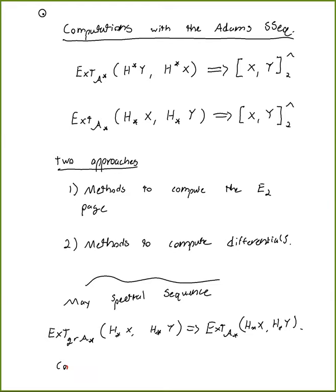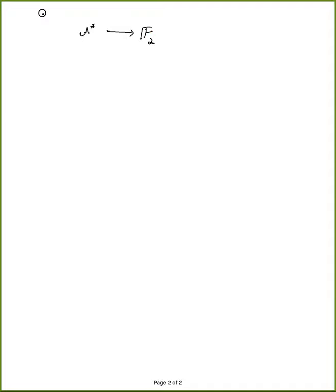The May spectral sequence arises from a filtration of the dual Steenrod algebra. The filtration is a bit annoying because normally when you think about filtrations of commutative algebras you'd filter by modules, but here it's a filtration by comodules. It arises from a filtration on the Steenrod algebra given by powers of the unit ideal — the kernel of the augmentation map from the Steenrod algebra to F2, which kills all the Sq^i. For the dual Steenrod algebra you dualize this, taking copowers of the unit coideal.